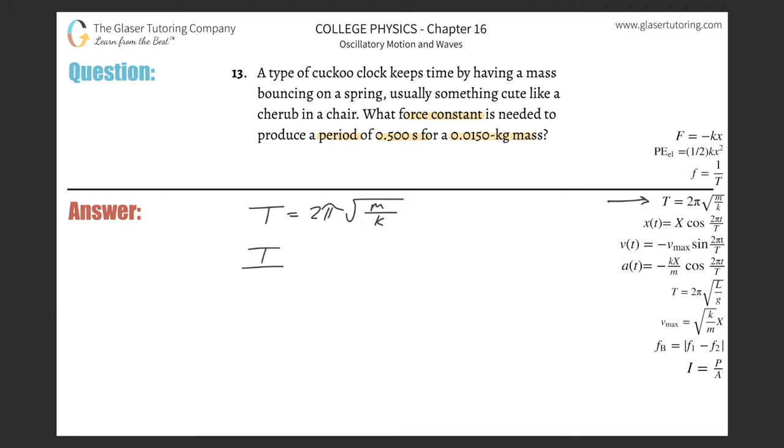What I'm going to do is divide out the 2π from both sides, so T over 2π equals the square root of m over k. Now I need to get rid of the square root, so I'll square both sides. This leaves me with (T over 2π) squared equals m over k.